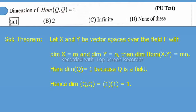Here, dim(Q) equals 1 because Q is a field. Hence, dimension Hom(Q,Q) = (1)(1) = 1.